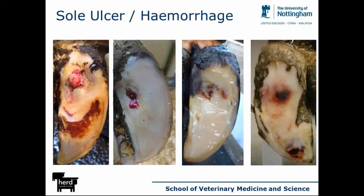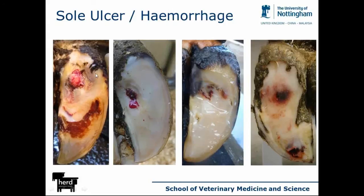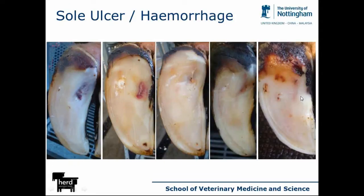Just to introduce the claw horn lesions as a starting point — here are the classic sole ulcer type lesions at severe levels. I'm also going to be talking about sole hemorrhage at the sole ulcer site in the same vein. These lesions are just milder and/or earlier manifestations of the more severe lesions we're very often presented with when treating lame cows. Sole hemorrhage at the sole ulcer site is just an earlier and/or milder manifestation.